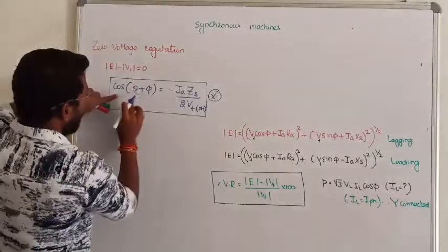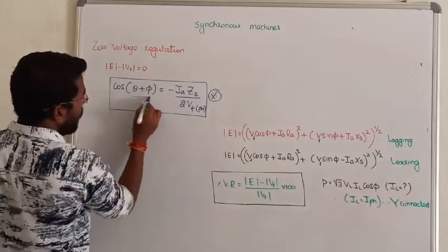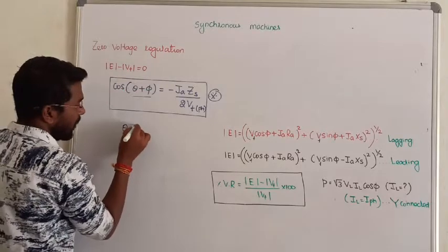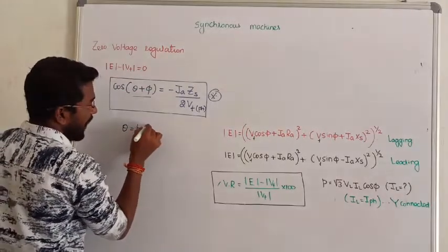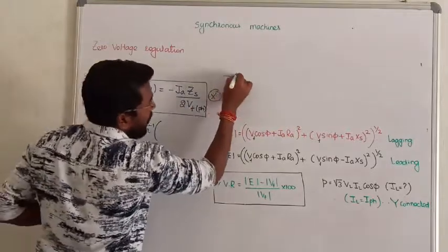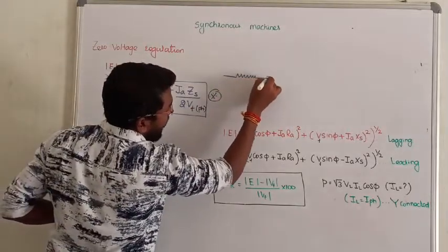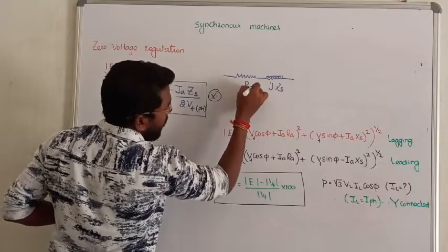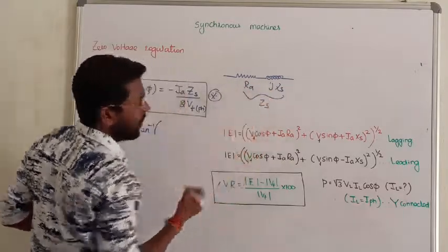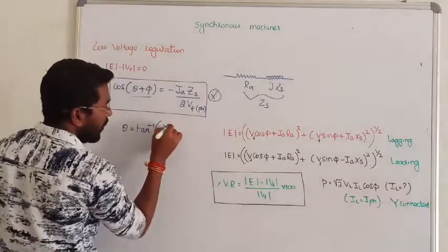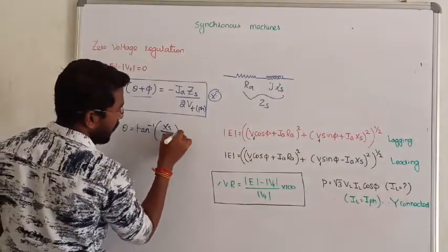Now see, cos(θ + φ), that is the impedance angle. We can bring it from tan inverse of impedance angle, that is internal armature resistance reactance. The synchronous reactance is jX_s plus R_A. This is the total impedance Z_s.